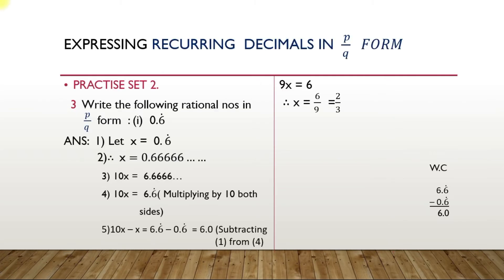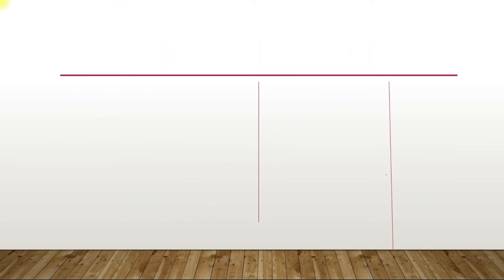Now we go to the next one. You should follow the steps — copy into your notebook and do it 2 to 3 times so you will understand. The same steps are followed in the next sum. The second sum is 0.37 recurring. How many numbers are recurring here? 2 numbers — 3 and 7, that is 37.